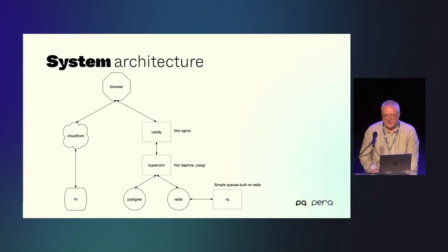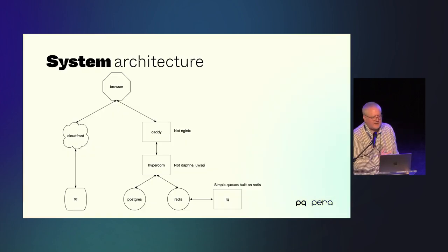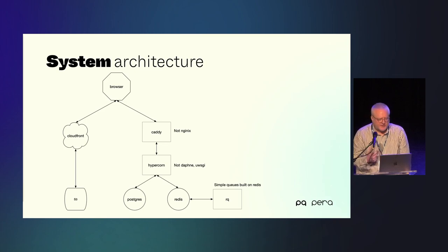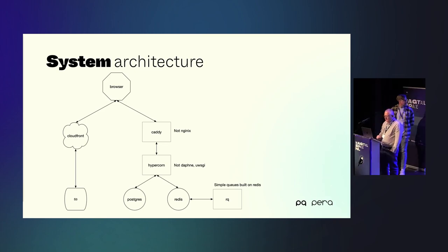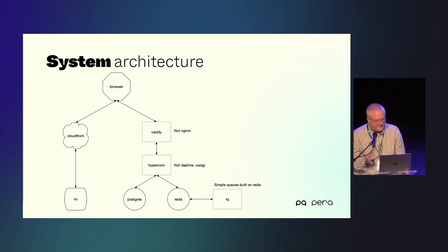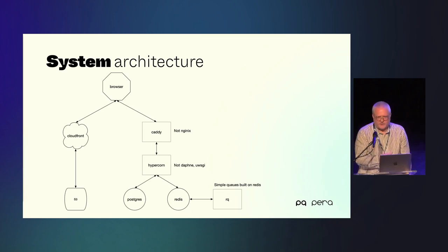In terms of system architecture — pretty standard, basically a simplified version of what our product is. The front end is served by Caddy, which is new for us since we were using nginx. Caddy is much much easier — I really recommend it. The Django process runs in Hypercorn, which we chose over Daphne because it has automated restarts. It's ASGI because we wanted to try ASGI rather than uWSGI. The database is Postgres on the back end, and Redis.